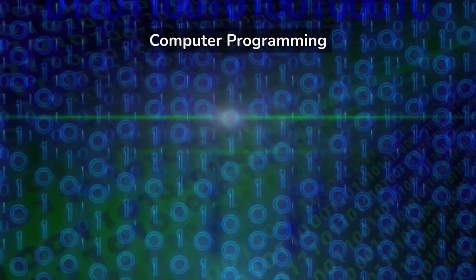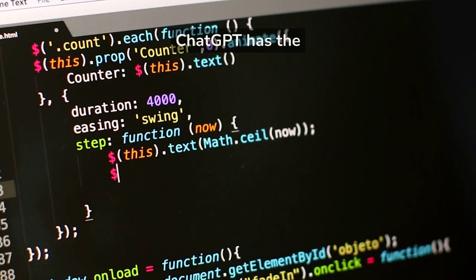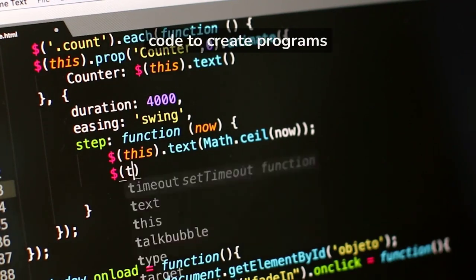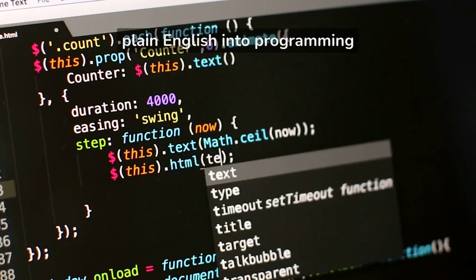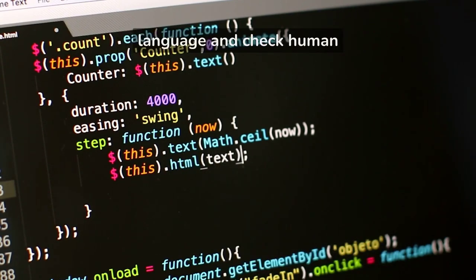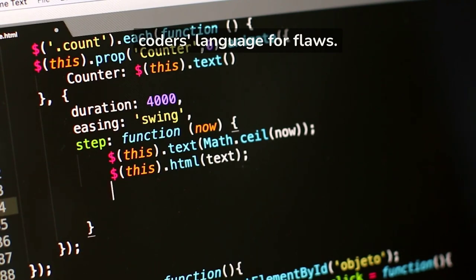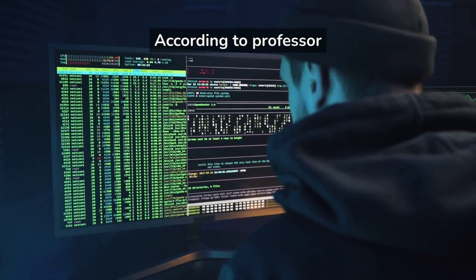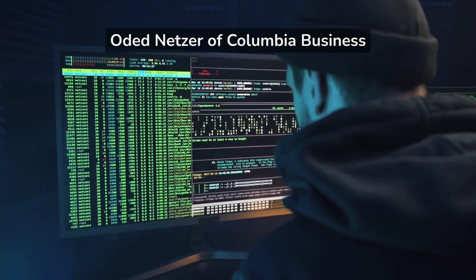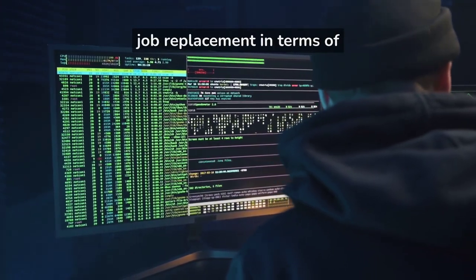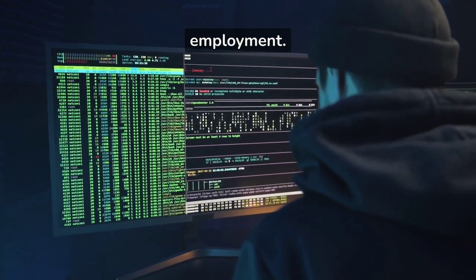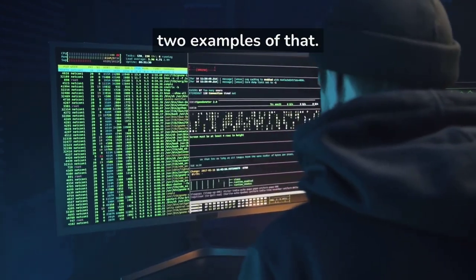Computer Programming. ChatGPT has the ability to create computer code to create programs and software. It has the ability to translate concepts from plain English into programming language and check human coders' language for flaws. According to Professor Oded Netzer of Columbia Business School, it is mostly an enhancer rather than a full job replacement in terms of employment.